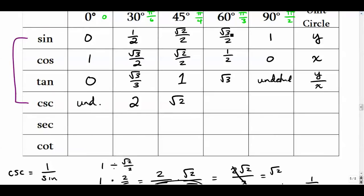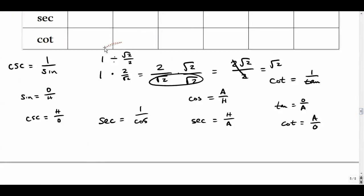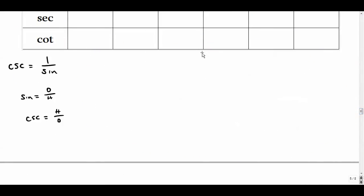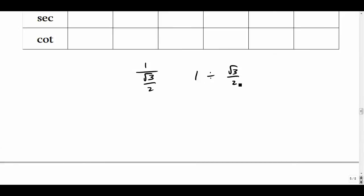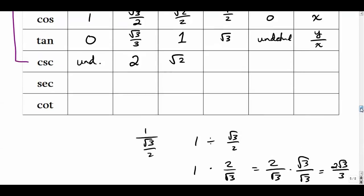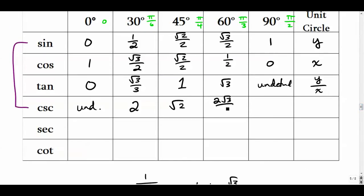Cosecant of 60° is 1 over radical 3 over 2. Flipping gives 2 over radical 3; rationalizing gives 2 radical 3 over 3. So cosecant of 60° is 2 radical 3 over 3. Cosecant of 90° is 1 divided by 1, which is simply 1. The unit circle definition of cosecant is 1 over y.